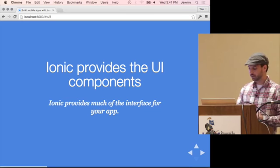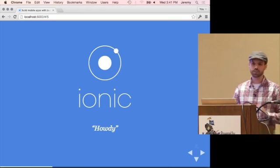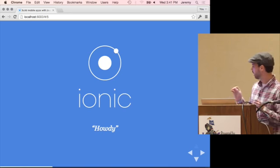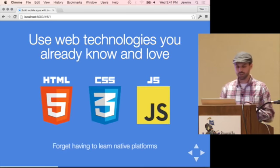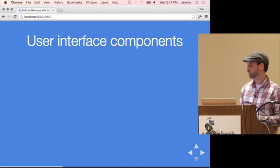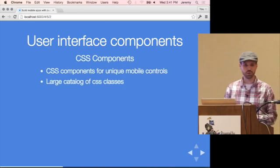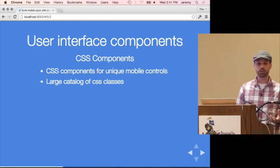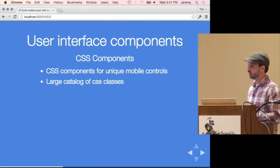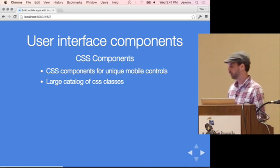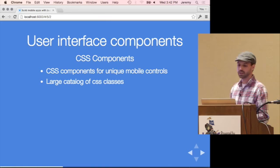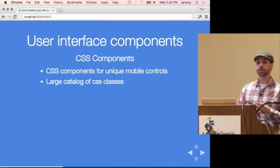Ionic is a few other things beyond UI components. The components come in two flavors. There are CSS-type components — essentially a set of class names you apply to any element to transform it into a particular component, whether it's a button, a list type, avatars, badges, or any number of things. They've got dozens of these different CSS-based components.